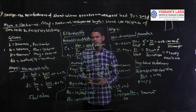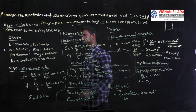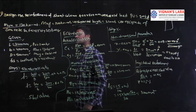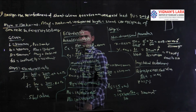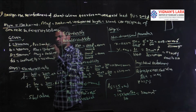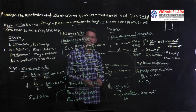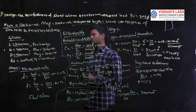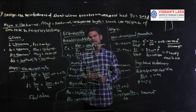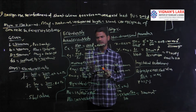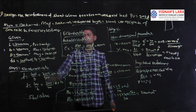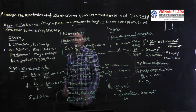Problem: Design the reinforcement of a short rectangular column 400 mm × 500 mm subjected to axial load Pu = 2000 kilonewtons, moment along X-axis Mux = 130 kNm, moment along Y-axis Muy = 120 kNm, unsupported length = 3200 mm. Use M20 grade concrete and Fe415 steel. The given parameters: b = 400 mm, d = 500 mm, Pu = 2000 kN, Mux = 130 kNm, Muy = 120 kNm.